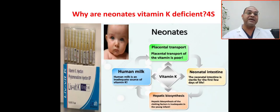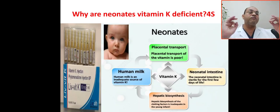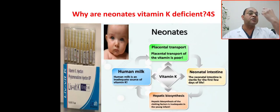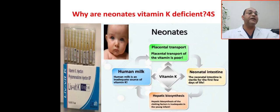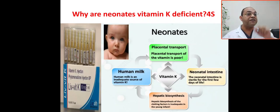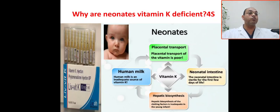Human milk is an inadequate source of vitamin K. Human milk contains approximately 1 microgram of vitamin K per liter, whereas formula milk contains 50 to 60 micrograms per liter.